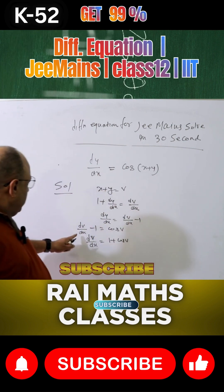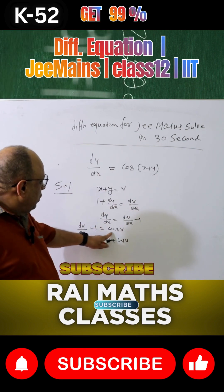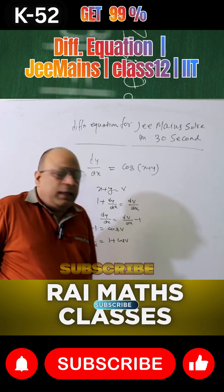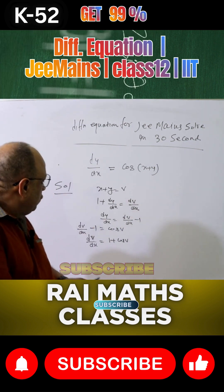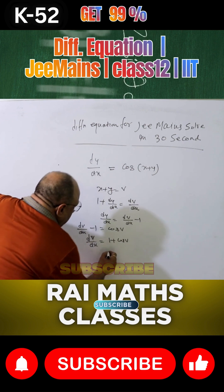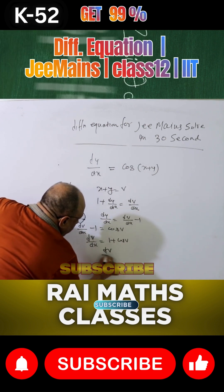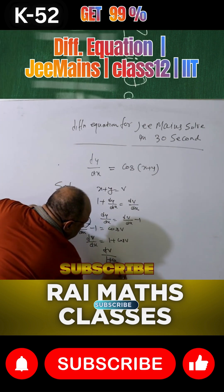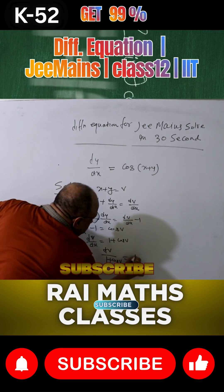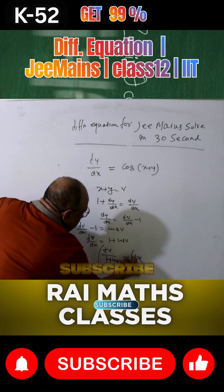Here, this condition: dv/dx minus 1 equals cos v. Therefore, dv/dx equals 1 plus cos v. And dv upon 1 plus cos v equals dx for integration.